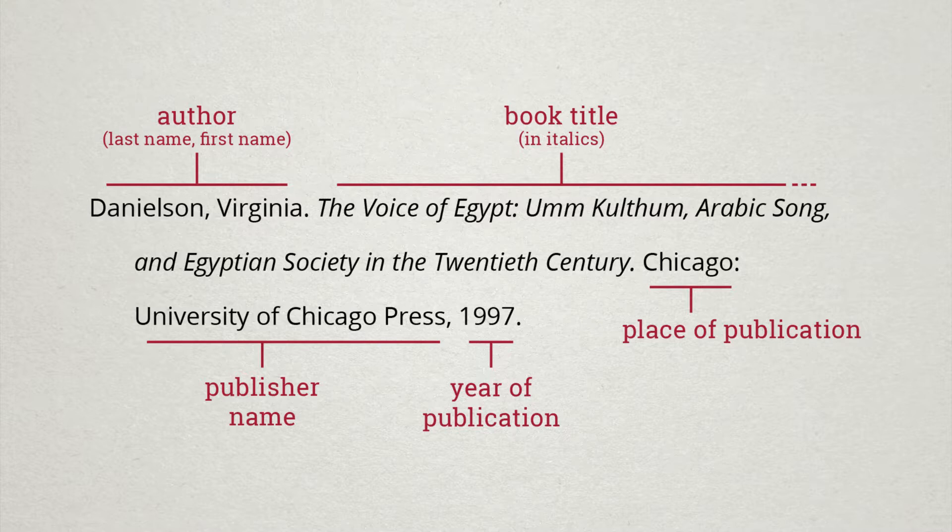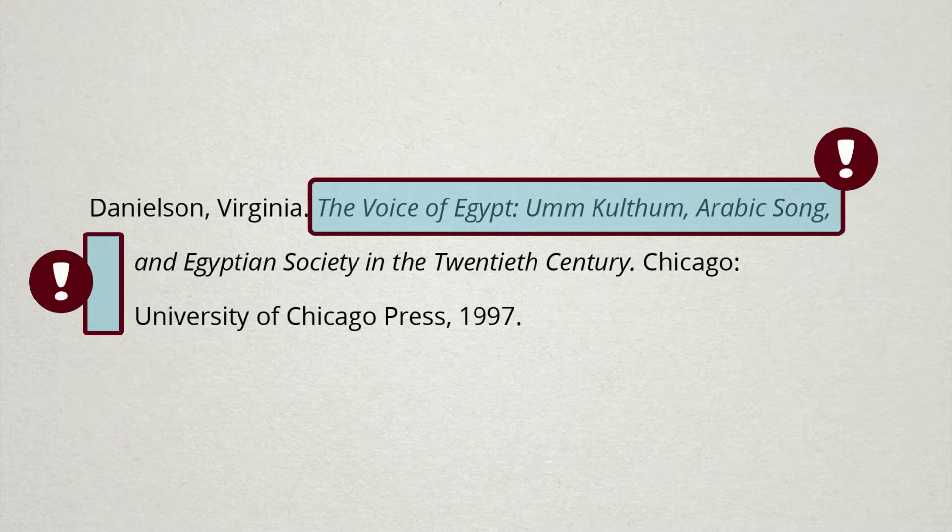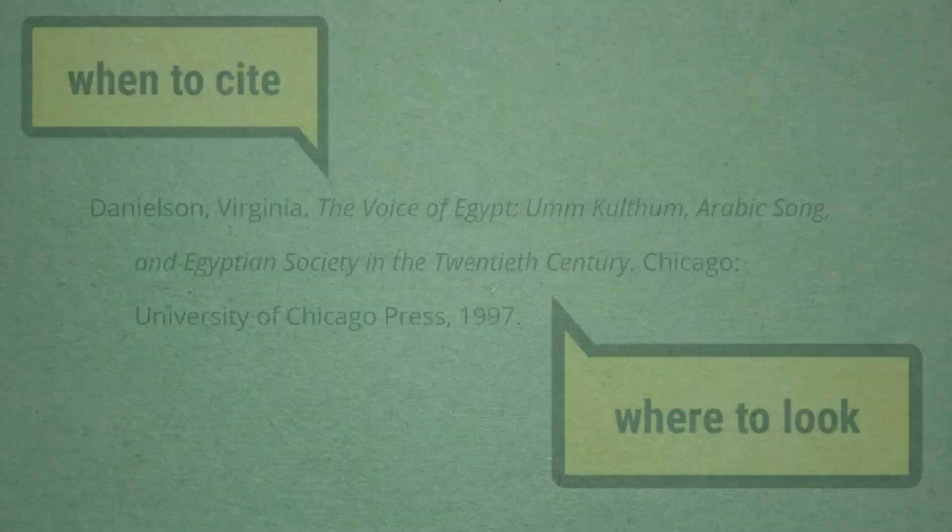Properly citing materials in music is critical to your scholarship. After completing this tutorial, you will be able to recognize the anatomy or the distinct parts of a citation for music sources. You will be able to apply some expert tips for creating accurate citations, understand the importance of citing sources, and recognize when to cite something and where to look for citations in sources.